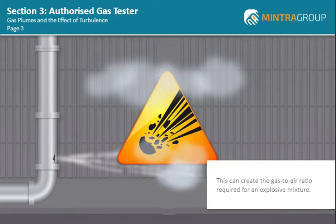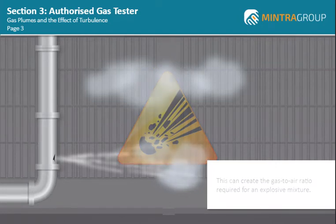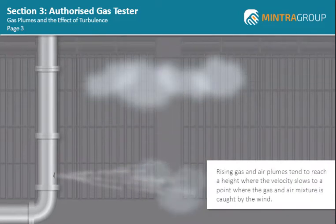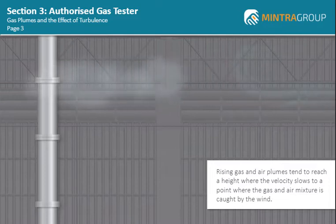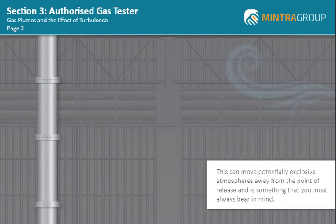Rising gas and air plumes tend to reach a height where the velocity slows to a point where the gas and air mixture is caught by the wind. This can move potentially explosive atmospheres away from the point of release, and is something that you must always bear in mind.